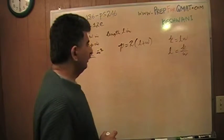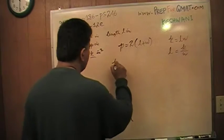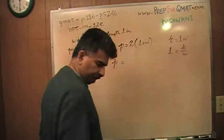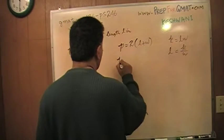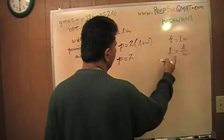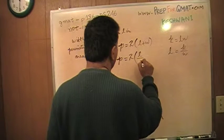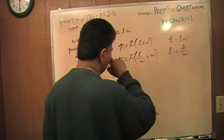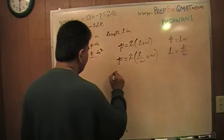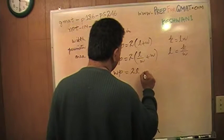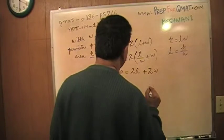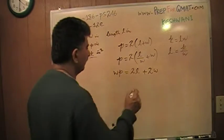L is K over W. I am going to put it back in this equation. The perimeter is 2 times L, which is K over W, plus W. Multiply the whole equation by W, so I get WP equals 2 times K plus 2 times W squared.